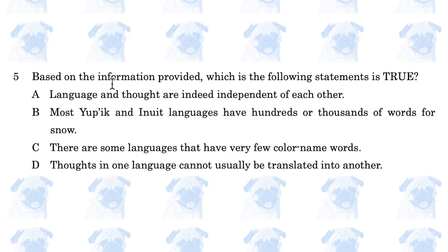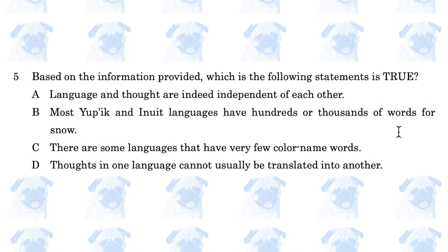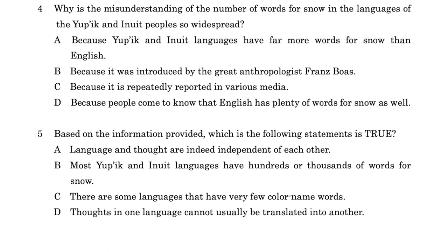The final question, number 5: Which of the following statements is true? A: language and thought are indeed independent of each other; B: most Yupik and Inuit languages have hundreds or thousands of words for snow; C: there are some languages that have very few colour name words; D: thoughts in one language cannot usually be translated into another. D is false. C is the answer, because this was clearly mentioned with respect to the Dhani language in New Guinea. So this is the end of this exam paper — let me know if you have any questions, and see you next time.